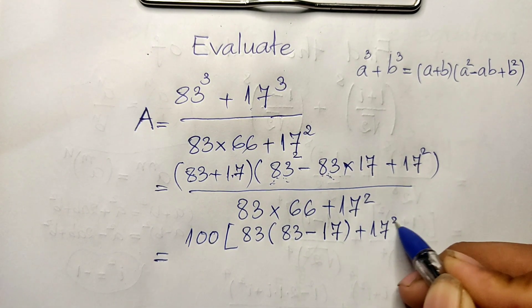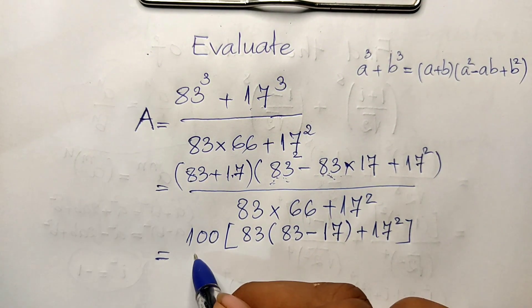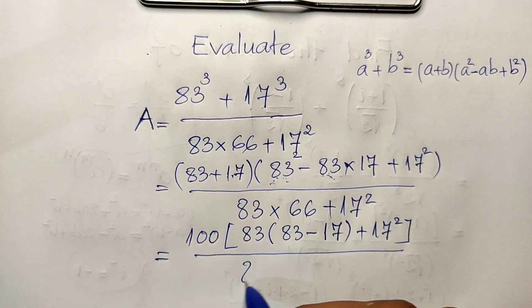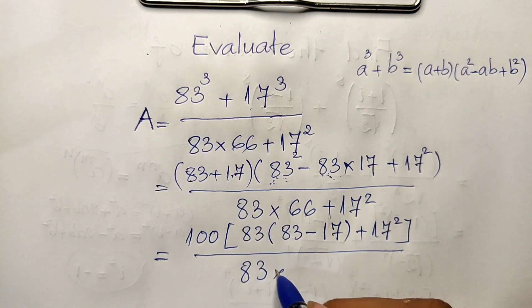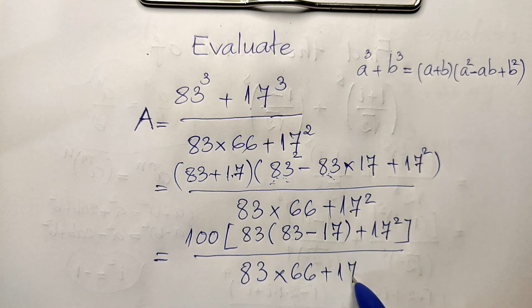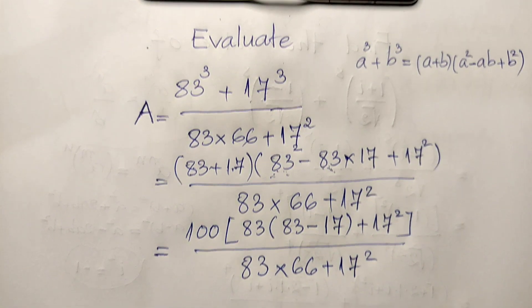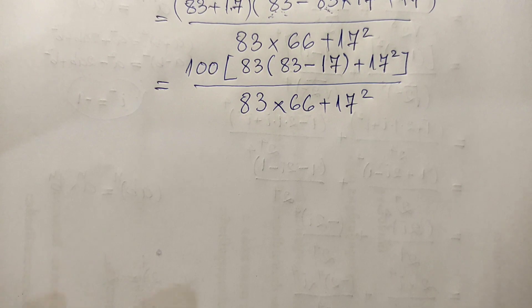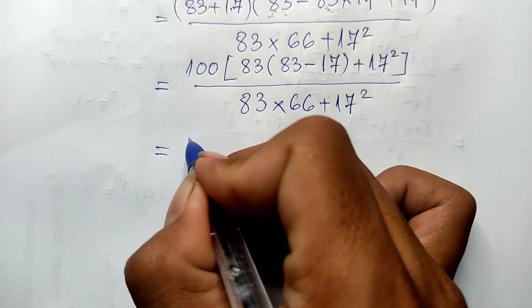Divided by 83 multiplied by 66 plus 17 squared. Okay, now this equals 100.